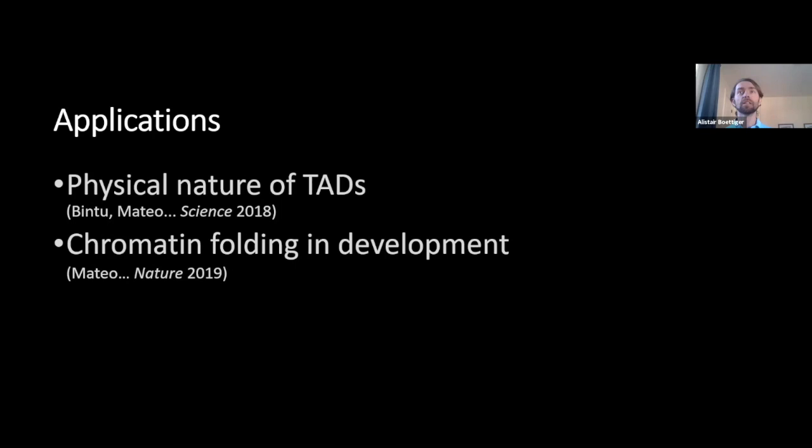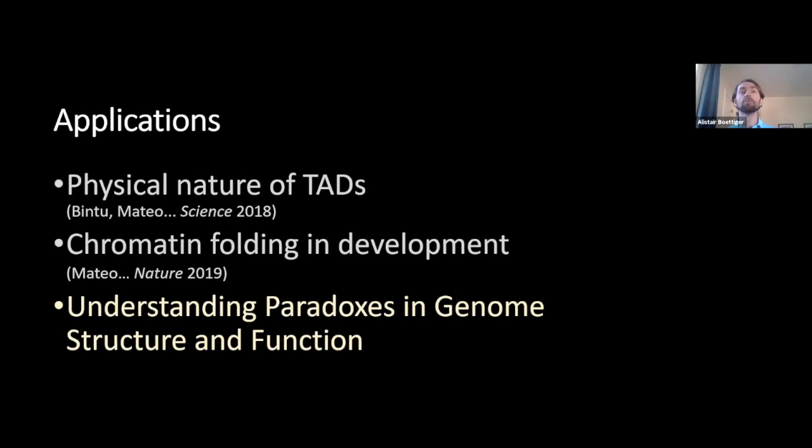We can quantify the three-dimensional structure, nascent RNA levels, and absolute molecule counts of mature mRNA in individual cells. The relative throughput is high—in a single experiment of about a week, Leslie collected about 30,000 cells, with about 30 RNA species totaling about half a million transcripts across all cells, and genome structure of the Hox complex measured in each cell. Today I'd like to highlight a few applications: the physical nature of TADs, the role of chromatin folding in Drosophila development, and—if time permits—some paradoxes in genome structure and function and how modeling informed by our imaging can help resolve them.